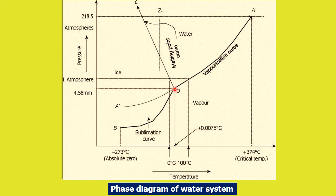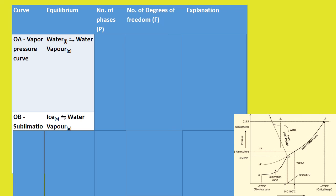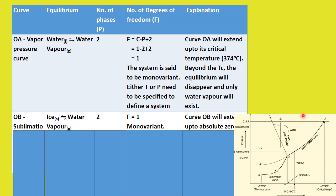Point O is called the triple point, where ice, water, and water vapor — all three — are in equilibrium. Now, applying the phase rule to curve OA, the vapor pressure curve: water and water vapor are in equilibrium, so the number of phases is 2. The degrees of freedom F = C − P + 2 = 1 − 2 + 2 = 1. The system is monovariant, meaning either temperature or pressure needs to be specified to identify the system on curve OA.